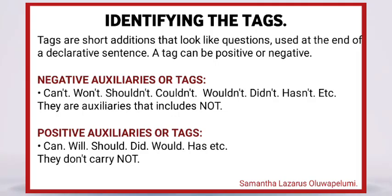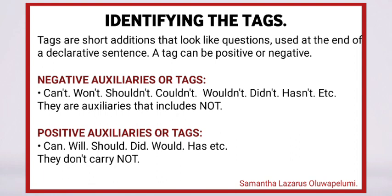Identifying the tags. Tags are short additions that look like questions used at the end of a declarative sentence. A tag can be positive or negative. For negative auxiliaries or tags, we have: can't, won't, shouldn't, couldn't, wouldn't, didn't, hasn't. They are auxiliaries or tags that include 'not'.